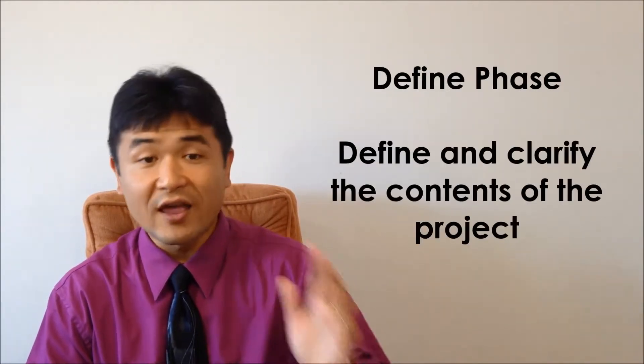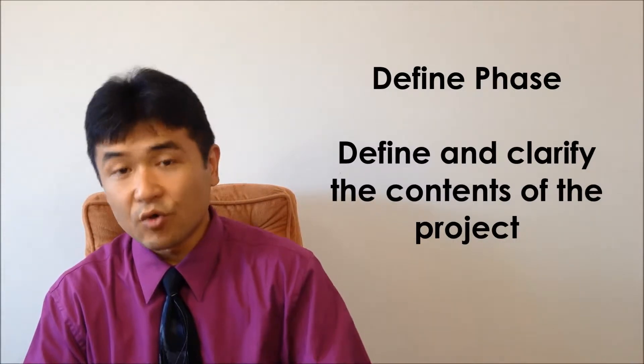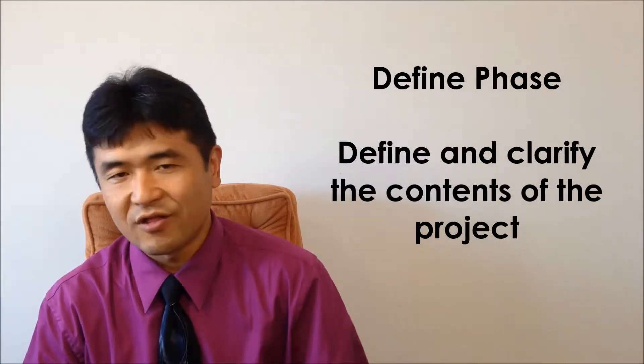The first letter D is for the define phase. It's a phase to clarify the context of the project you are going to start, such as background for carrying out the project, goal and purpose of the project, the project team members, and so on. Also, what is the target process? You may want to represent it graphically. If you continue your project with these definitions incomplete, you most likely will face major problems later on.